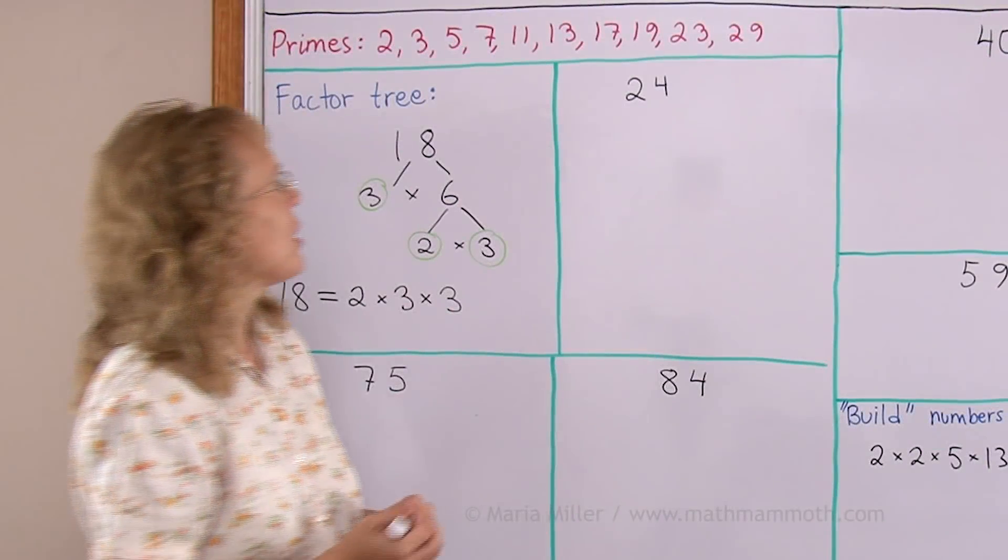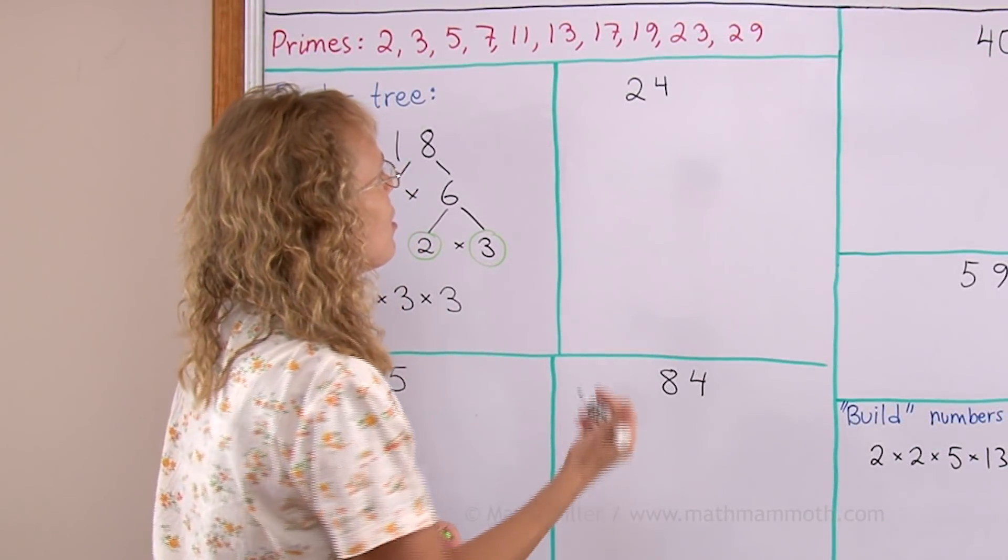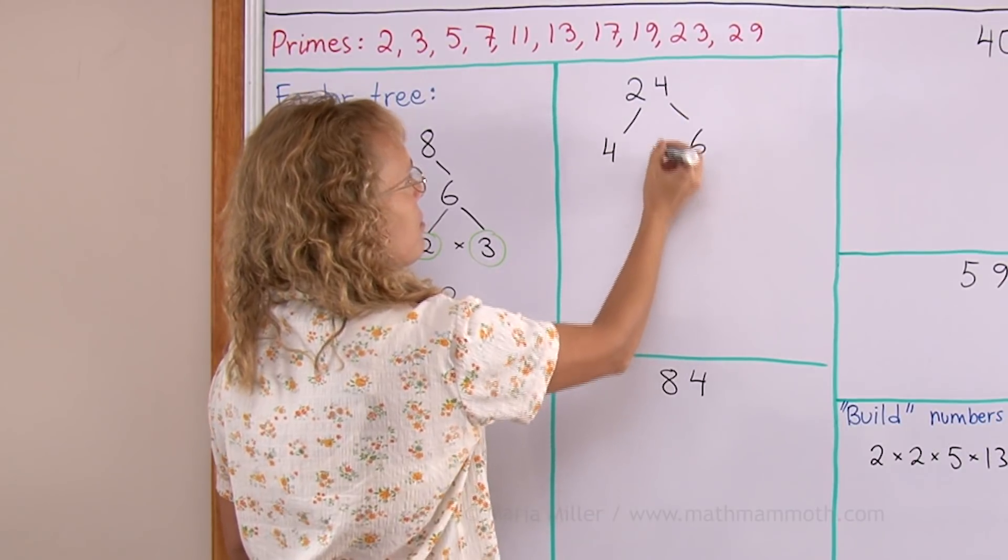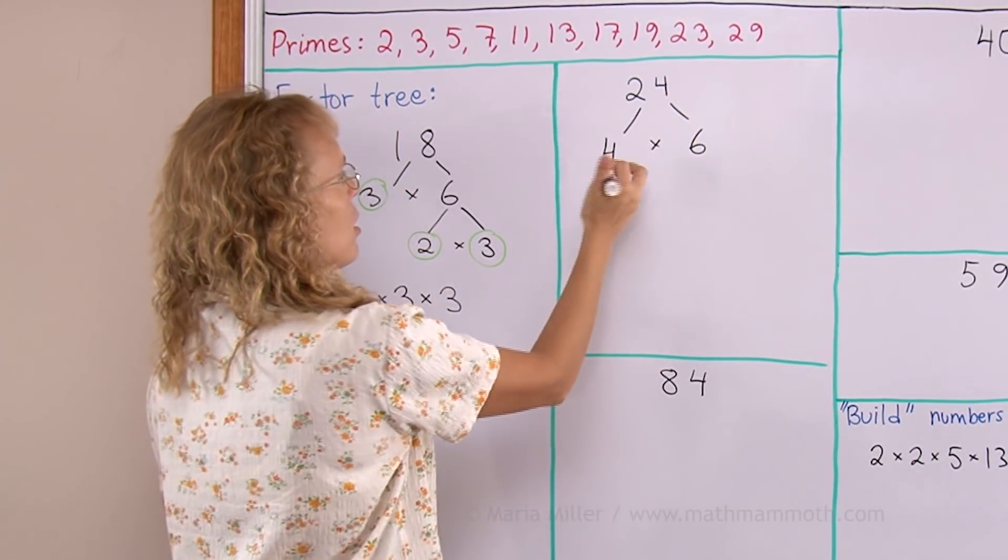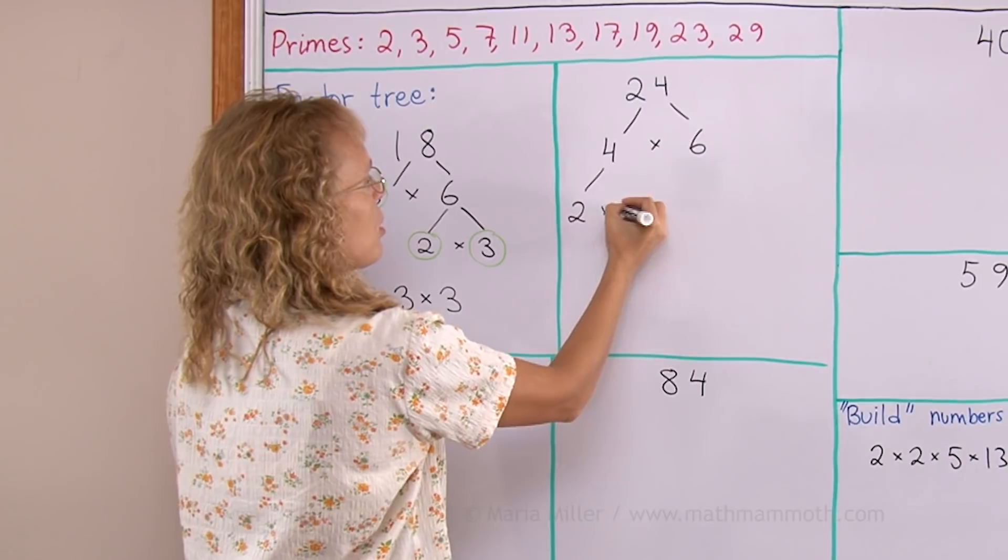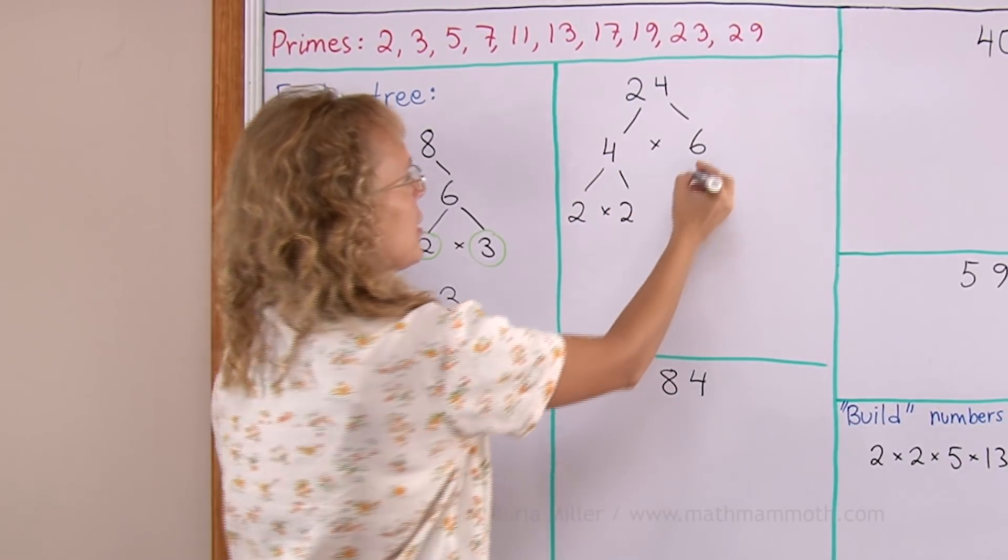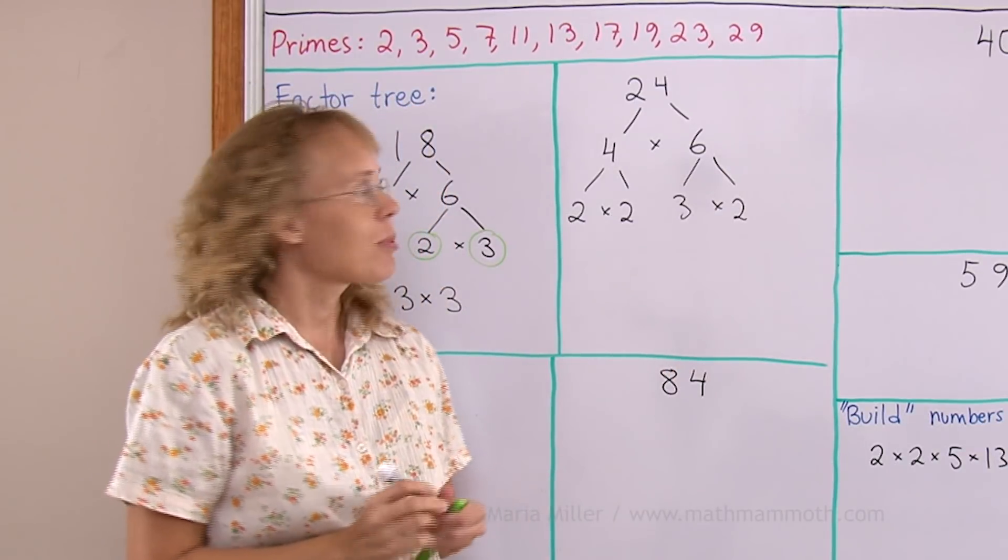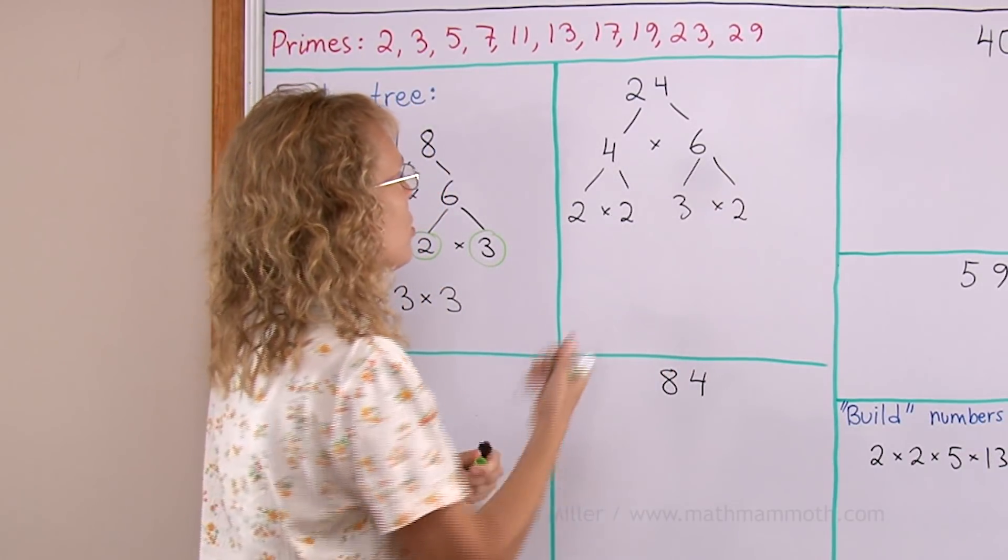Let's try it with 24. First of all, it would be for example 4 times 6. Now 4 in its turn is 2 times 2, and then 6 is 3 times 2. Now I have just primes: 2, 2, 3, and 2.